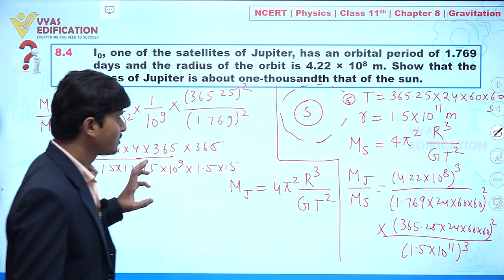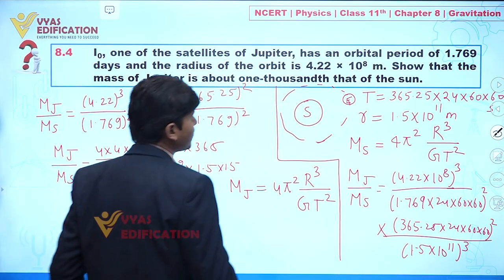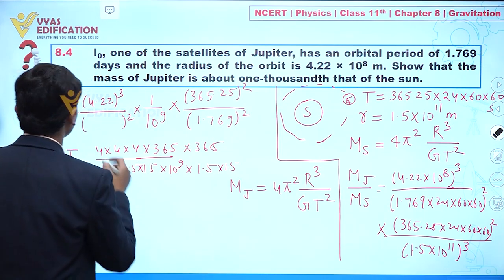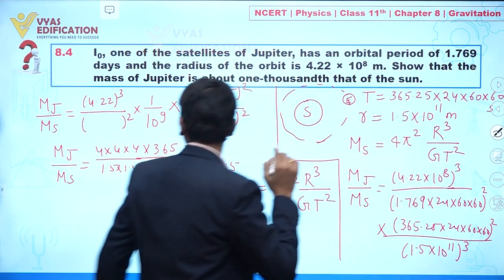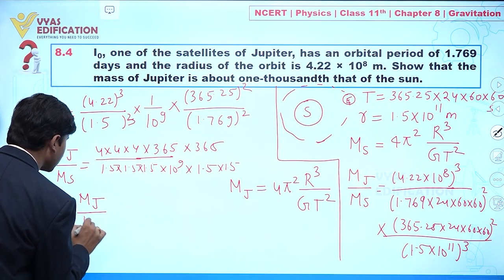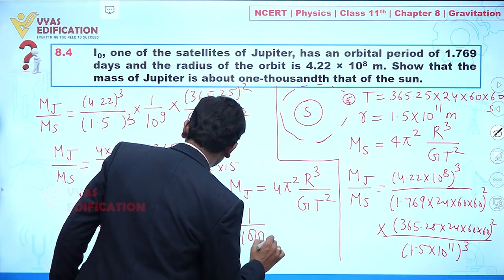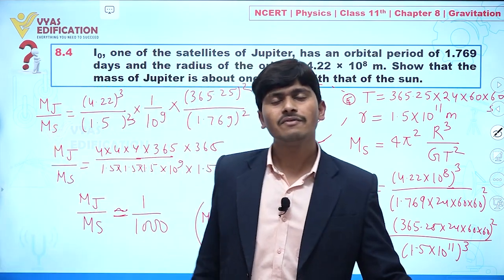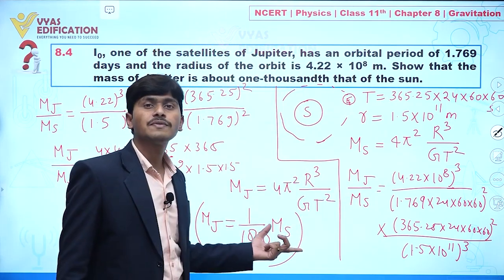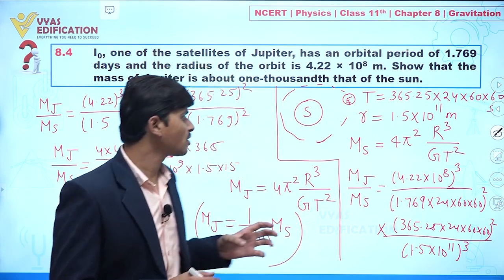After correcting: we use 1.5 cubed in the denominator. Solving with these approximations, we find the ratio is approximately 1/1000. So M_J = (1/1000) × M_S. This means the mass of Jupiter is 1/1000 times the mass of the Sun, which is what we needed to show.